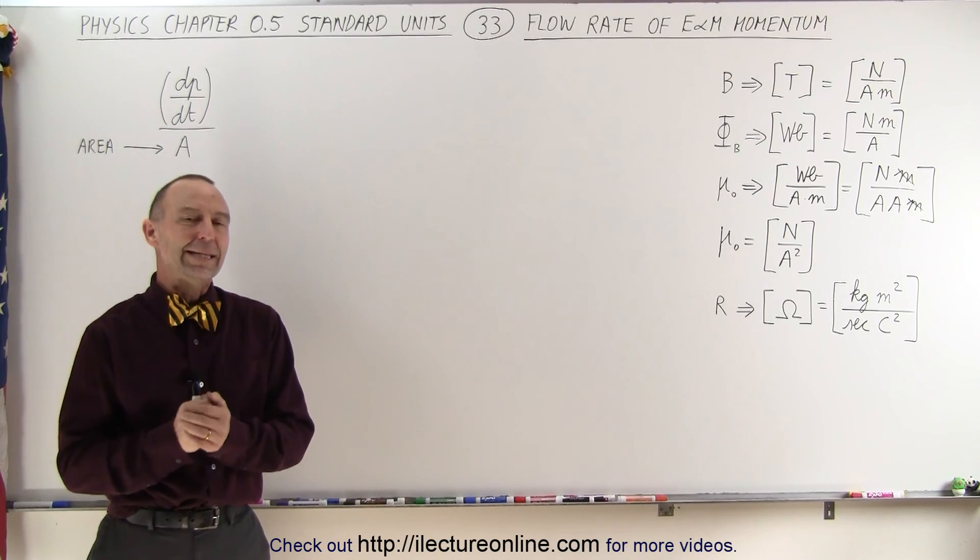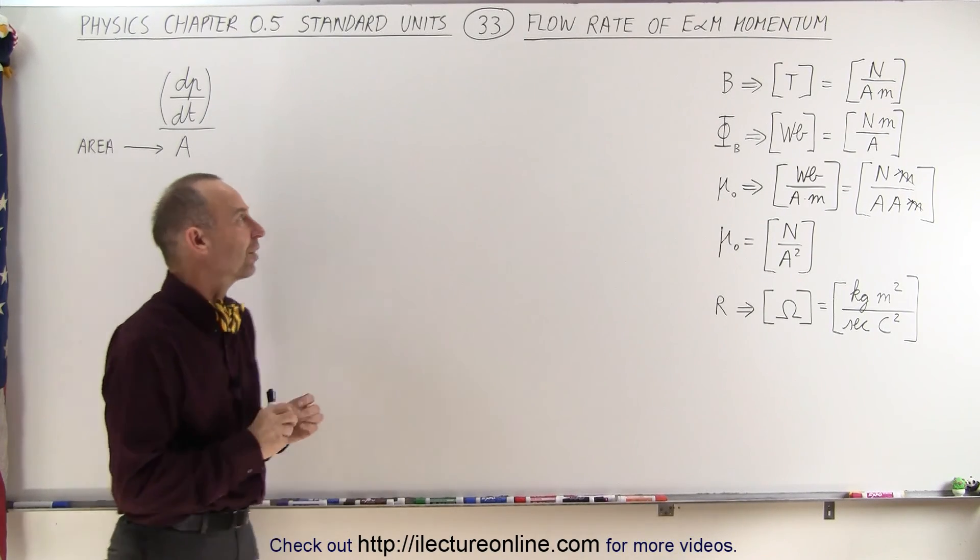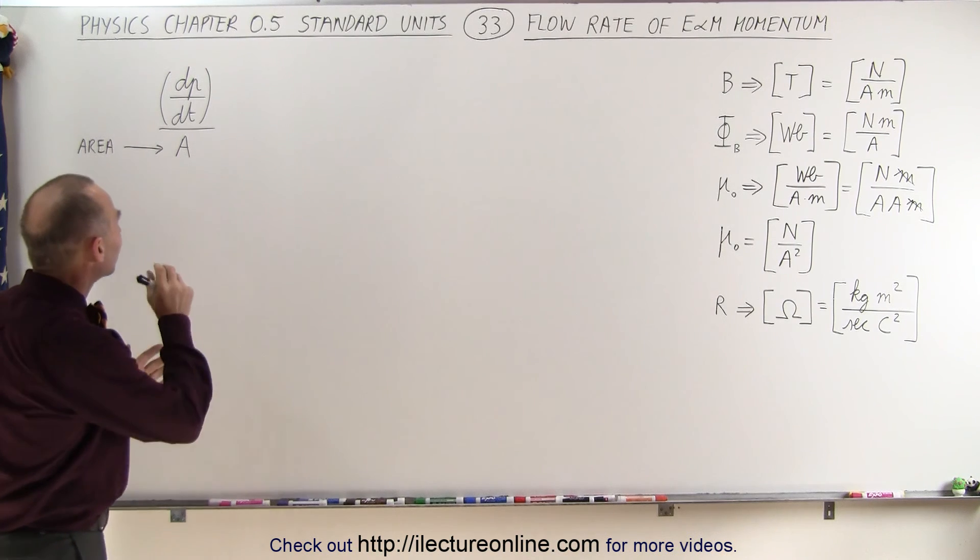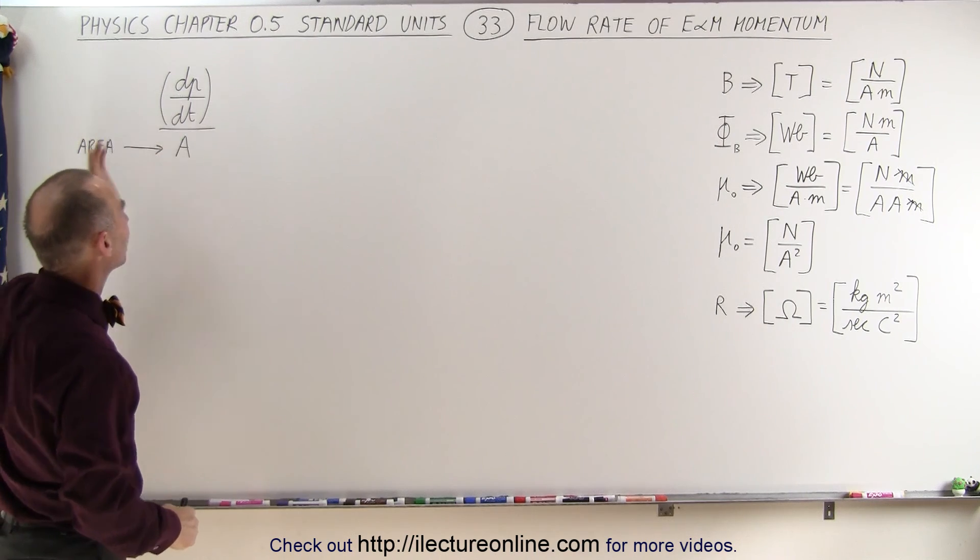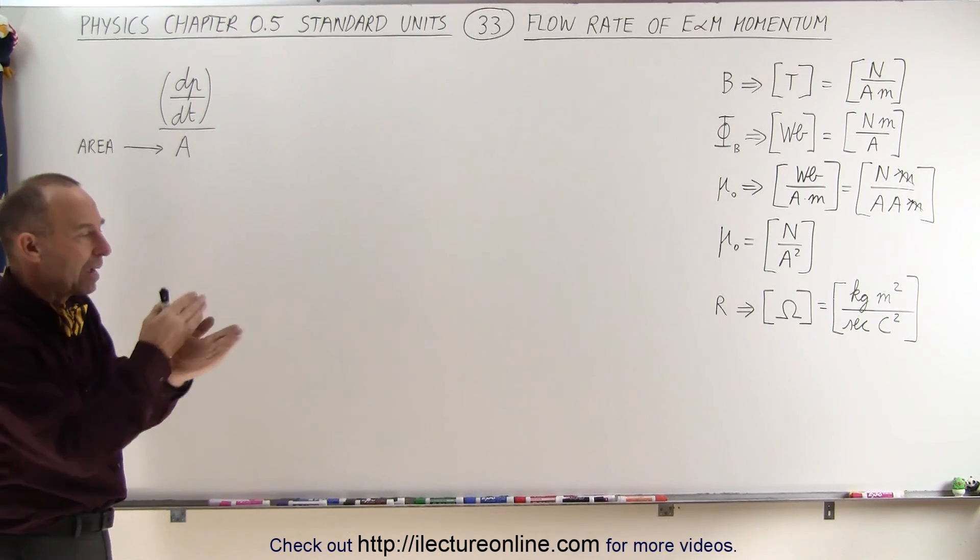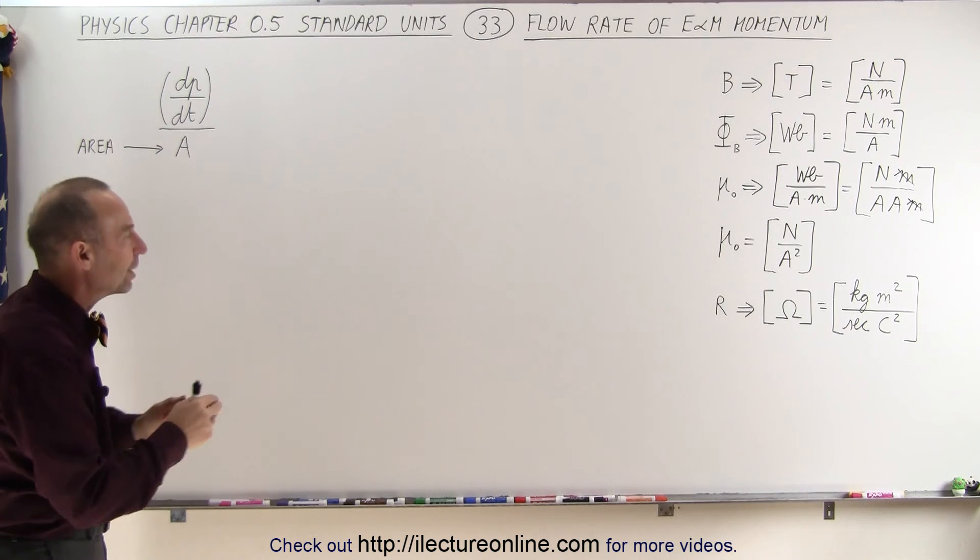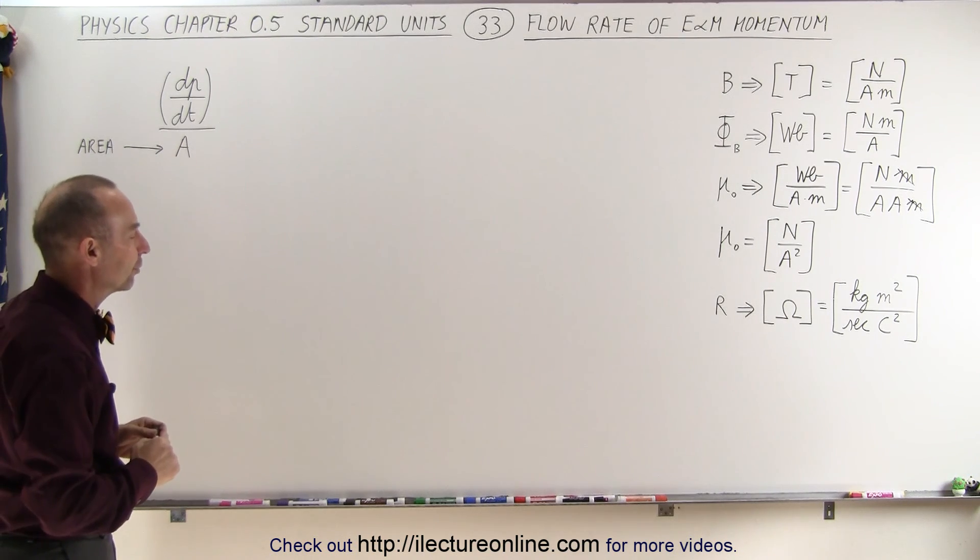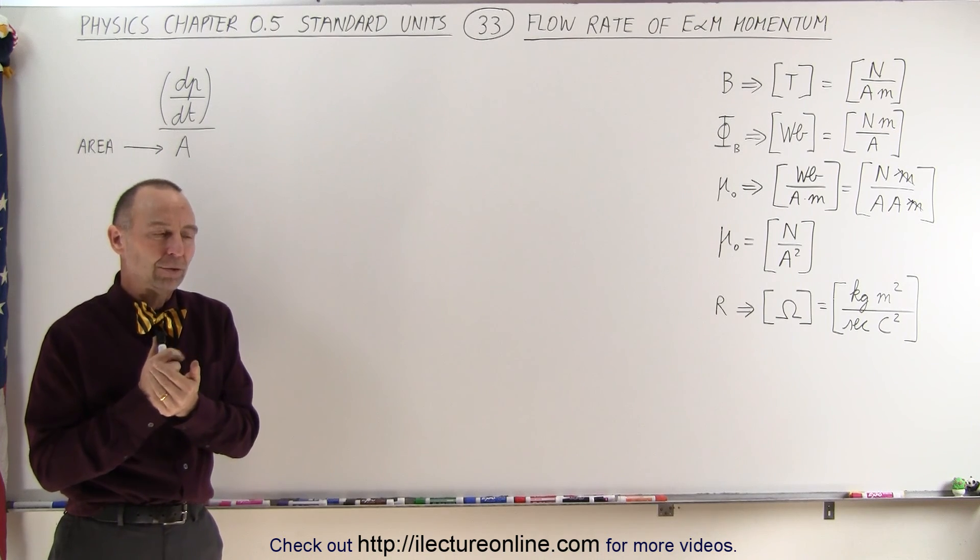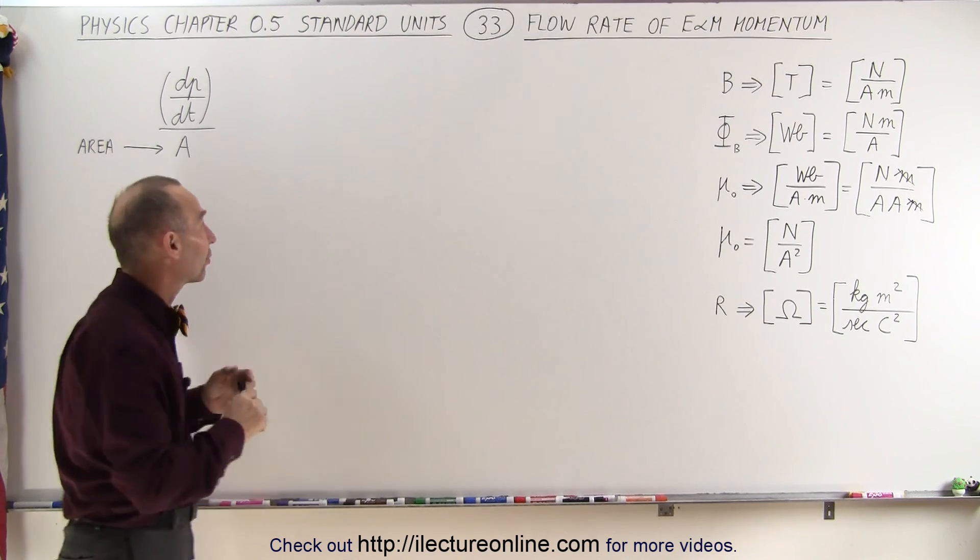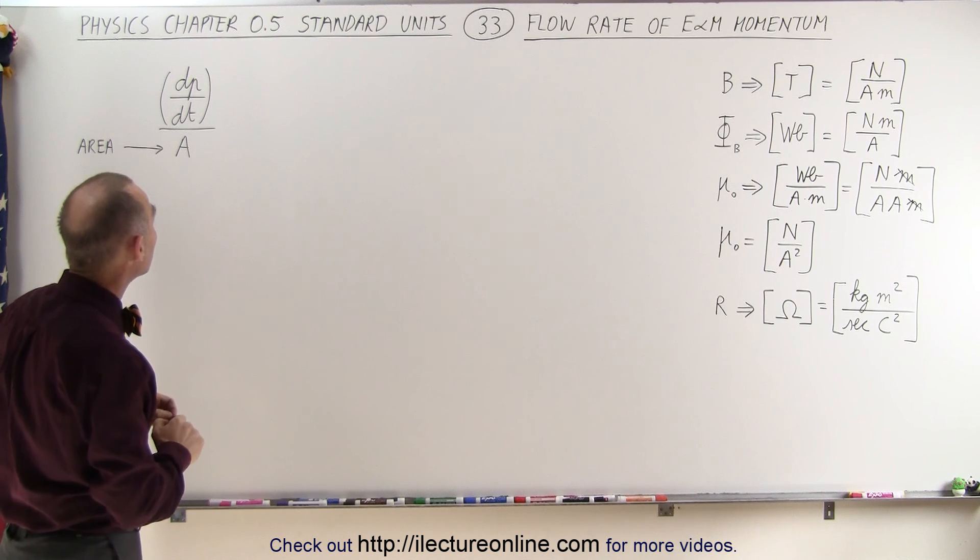Welcome to our lecture online. Here we're going to see something really interesting. We're going to start out with the flow rate of E&M momentum per unit area. So dp/dt is the amount of momentum per unit time that flows past per unit area past a given point. We're going to relate that somehow to radiation pressure. Stay tuned and see how that works, and it's all going to be done using units.